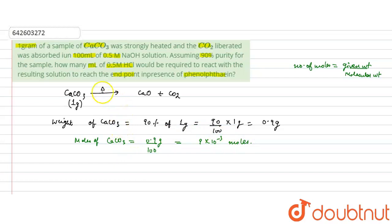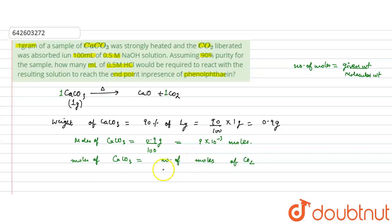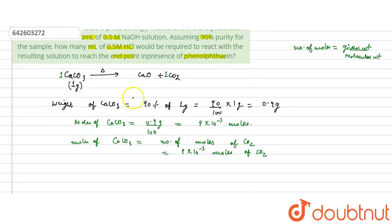From the reaction, one mole of calcium carbonate gives one mole of carbon dioxide. Therefore, the moles of CO₂ liberated will be equal to the moles of calcium carbonate, which is also 9 × 10⁻³ moles. These moles of carbon dioxide are liberated when the calcium carbonate is heated.